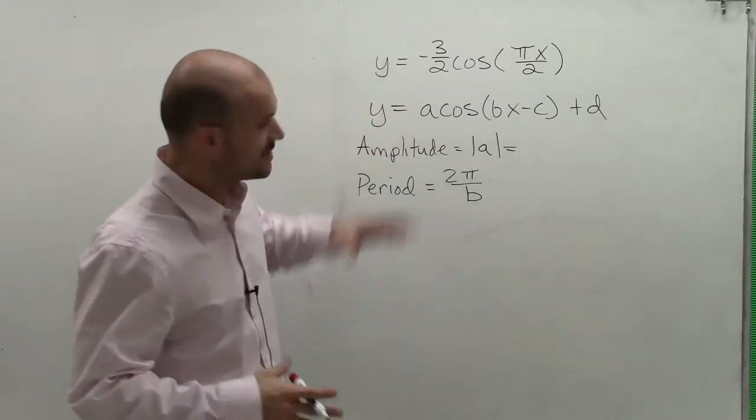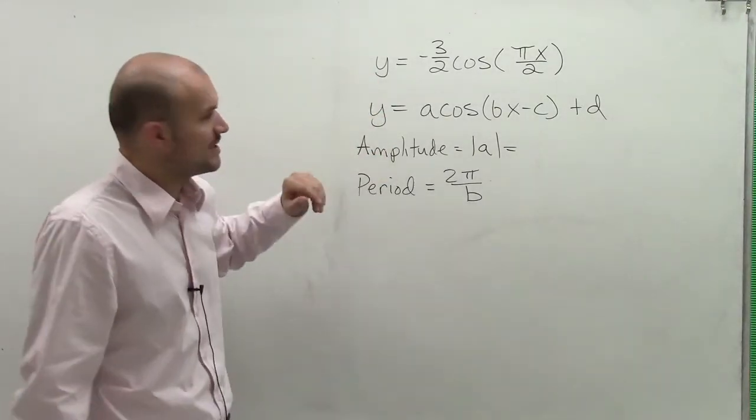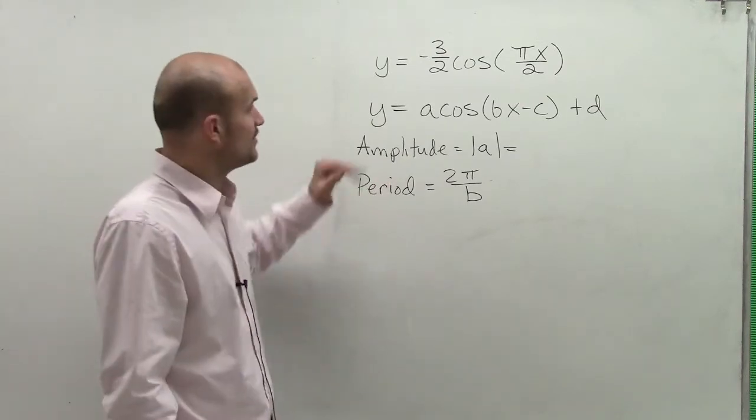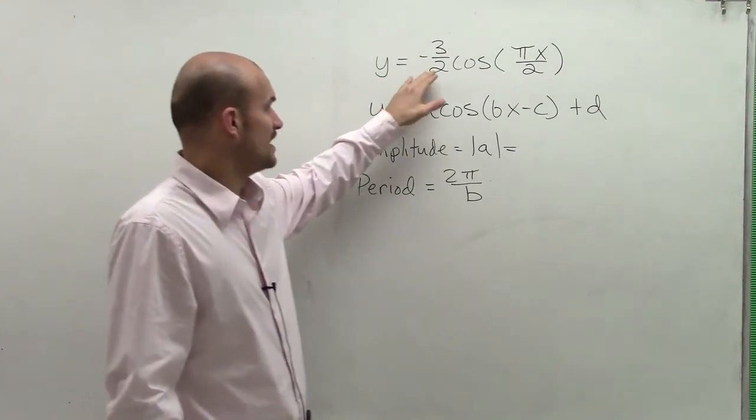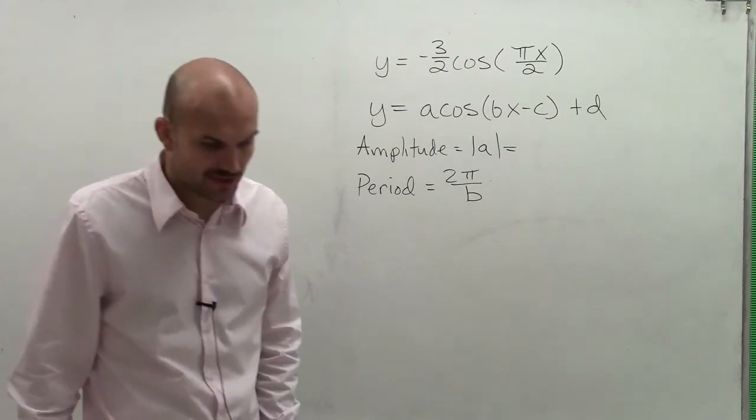Welcome. So what I want to do is show you how to determine the amplitude and the period of a function. The trigonometric function we're going to use to find the amplitude and period is y equals negative three-halves times cosine of pi x divided by 2.